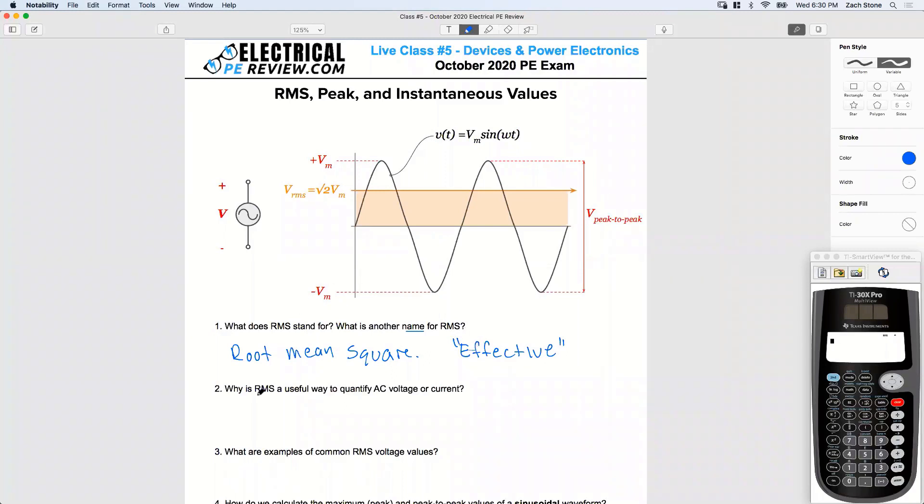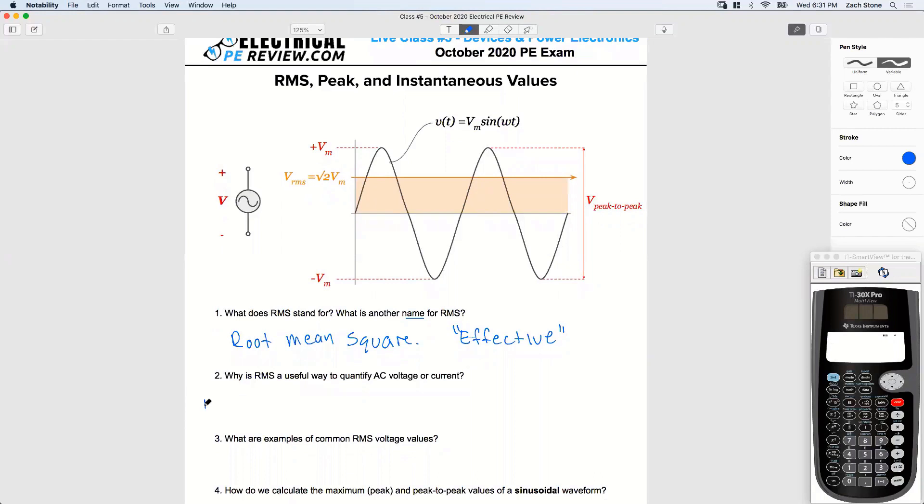Why is RMS useful to quantify AC voltage or current? Why do we use it? Average voltage is zero - great job, Jeff. So we'll say because the average value is zero. What else? DC equivalent from George and Norty and a few others. Great. So we'll say DC equivalent.